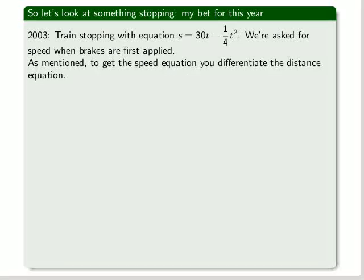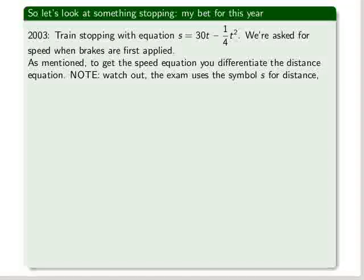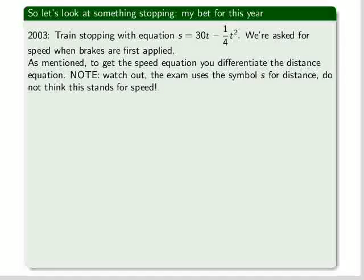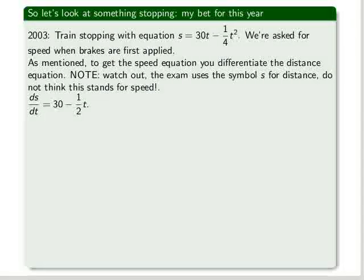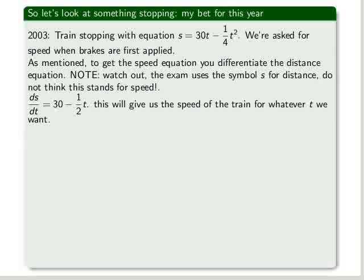As mentioned, to get the speed equation, you differentiate the distance equation. Note, watch out, the exam uses the symbol s for distance. Do not think this stands for speed. That stands for distance. So to get the speed equation, you differentiate once with respect to t, which is ds dt. And the answer is 30 minus 1 half t. This will give us the speed of the train for whatever t we want.